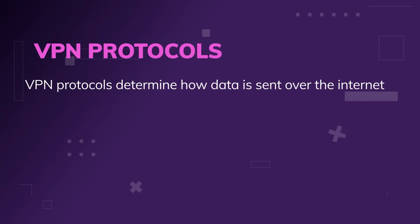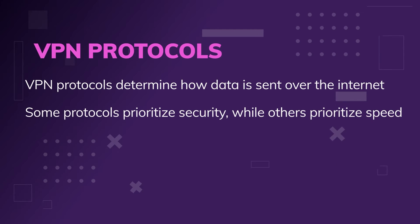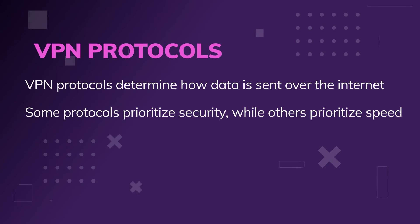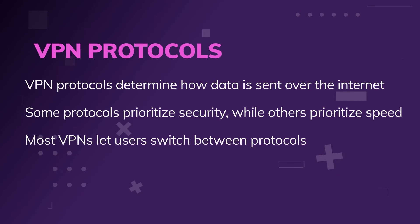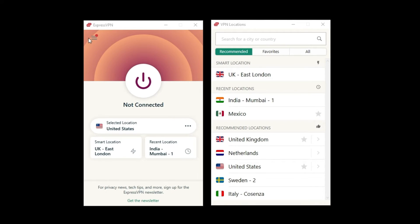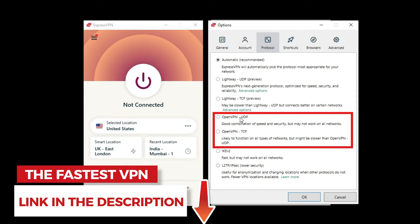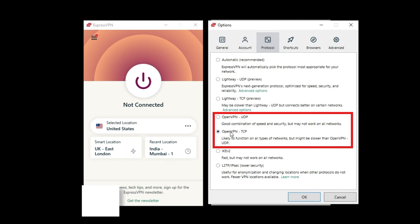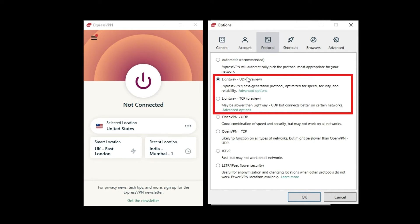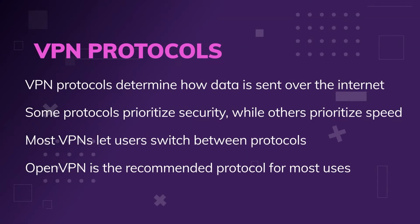VPN protocols are about transferring information in a secure and encrypted way. The thing to know is that some prioritize security while others prioritize speed — they still encrypt the data, but they try to do it faster, not necessarily in the most secure way. Most VPNs let users switch between different protocols depending on their needs. OpenVPN is the most common one and is the recommended protocol for most uses. It should be noted that some VPNs have their own private protocols. ExpressVPN in particular, and others, have developed protocols specifically for streaming and things like that.